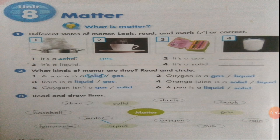Write down classwork as well. Now let's start. Question number one is here — different states of matter. Read and mark correct. Four pictures are given, and all four show different states of matter. You have to look at each picture carefully, read the statement, and do the question accordingly. One is already done for you.